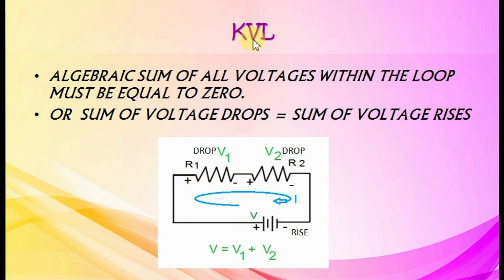Kirchhoff's Voltage Law: Algebraic sum of all voltages within the loop must be equal to zero, or sum of voltage drops equals sum of voltage rises.